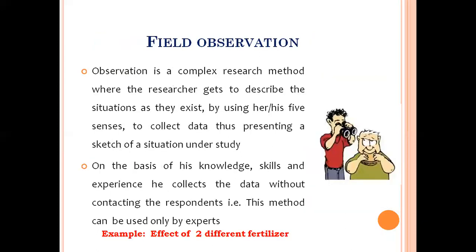In field observation, data are collected by observation — there is no contact made between the subject of interest and the researcher. The researcher collects data by applying their knowledge, skills, or senses. For example, suppose I have a paddy field with two different plots, and in these plots I want to see the effect of two different fertilizers using the same crop.